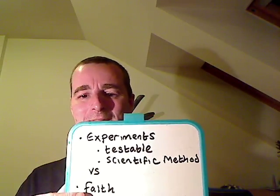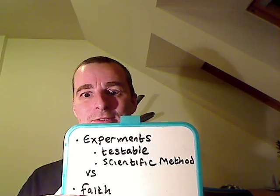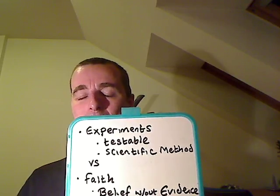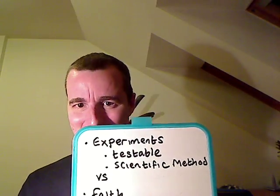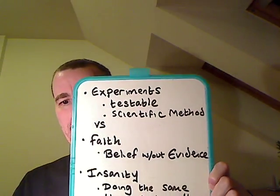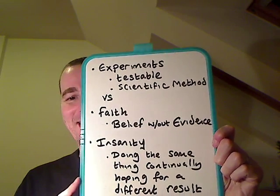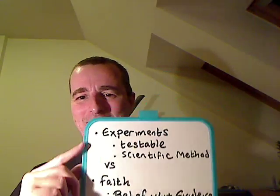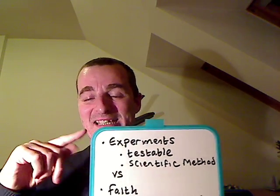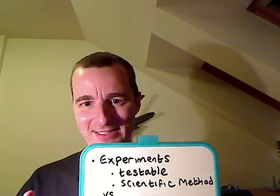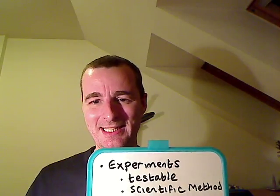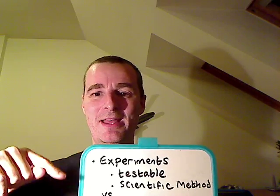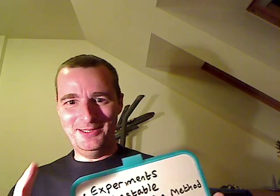The opposite of the scientific method is faith — just doing something because you were told it was right. Faith is defined as belief without evidence. One definition of insanity I really like is doing the same thing continually, hoping for a different result, but never achieving it. So please focus on thinking of ways to know whether your experiments have failed. We can all find evidence that they've succeeded, but try to work out tests that prove your method doesn't work, rather than just coming up with a few examples of where it does.